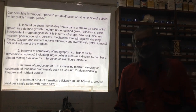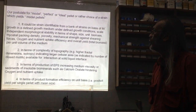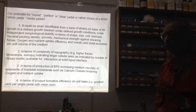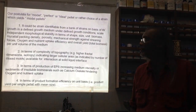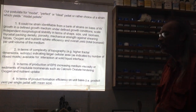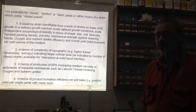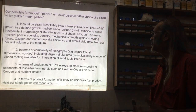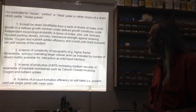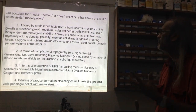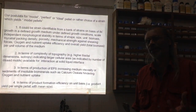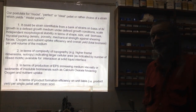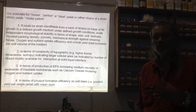Our major postulate for a model, perfect, or ideal pellet — or rather choice of a model pellet strain — has four points. First, it should be strain-identifiable from a bank of strains where a single species yields very interesting different phenotypes and morphotypes of interest, from which pellets can be produced under defined route conditions. Second, such a strain could be scale-independent in terms of morphological stability — growable at half-litre, five-litre, fifty-litre, up to ten-thousand-litre scale — with morphology unchanged irrespective of the volume of operations.